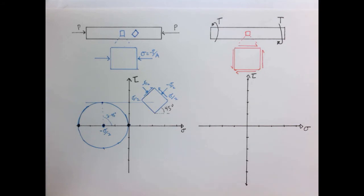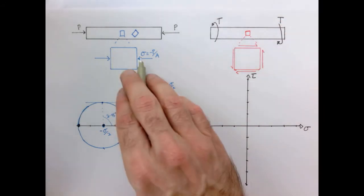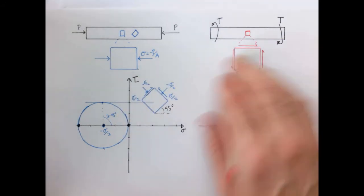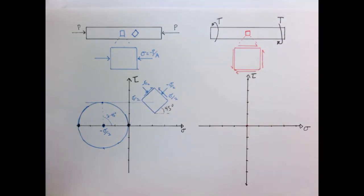Now let's do the same thing, but for our bar over here in pure torsion. So here I have a bar in pure torsion. Our state of stress when I extract an element as such is just pure shear. Here finding the center of the circle is quite easy because there are no normal stresses. So the average of the normal stresses is just zero.